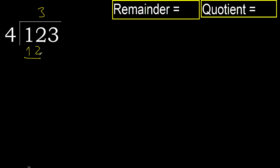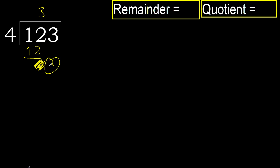Ok, subtract: 12 minus 12. Next, bring down 3. 3 is less, therefore next — that is not a number, therefore finished.